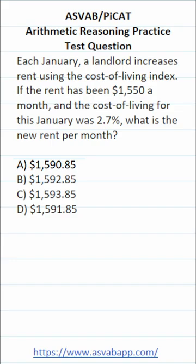To solve this, we first have to figure out what 2.7 percent of $1,550 is, and to do that we're going to multiply 1550 by 2.7 percent. 2.7 percent in decimal form is 0.027, so this becomes 1550 times 0.027.